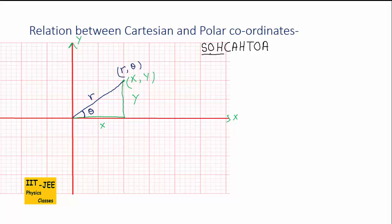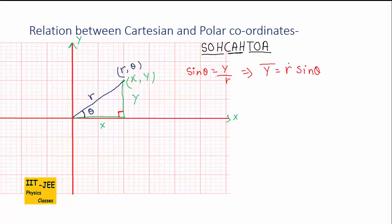We use the rules: sin equals opposite over hypotenuse, cos equals adjacent over hypotenuse, and tan equals opposite over adjacent. Using the sin rule in this right-angle triangle: sin theta equals y over r, which gives us y equals r sin theta. That's the first relation.